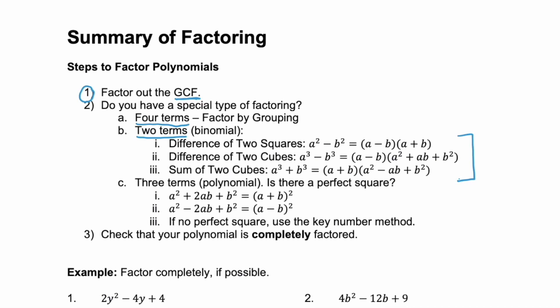Or, you could have a three-term polynomial. If this is the case, you can factor as we normally factor, or you can try to identify if it's a perfect square. If it's a perfect square trinomial, you factor following the perfect square trinomial formula.